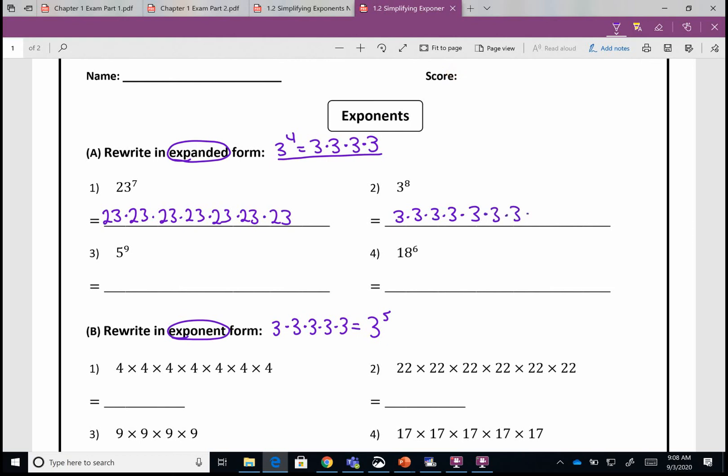In number three, we're going to multiply five times itself the exponent tells us to do that nine times. In number four, we're going to multiply 18 times itself the exponent tells us to do that six times.